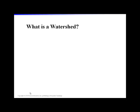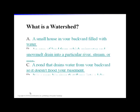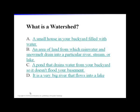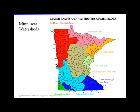One of the key concepts in this chapter is watersheds. A quick quiz: a watershed is — B — an area of land from which rainwater and snowmelt drain into a particular river, stream, or lake. In fact, everywhere on land is part of a watershed.